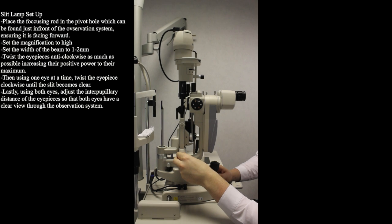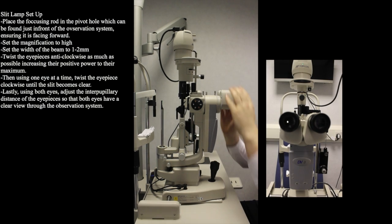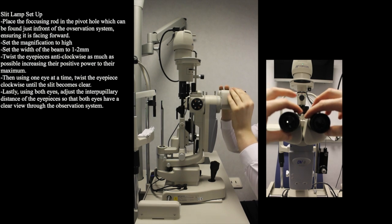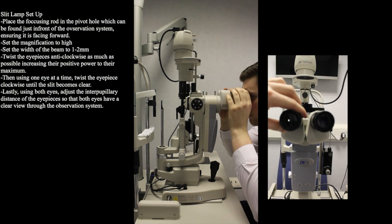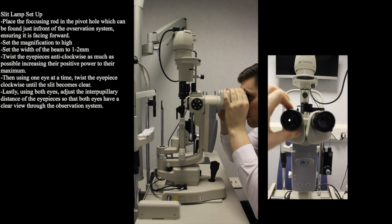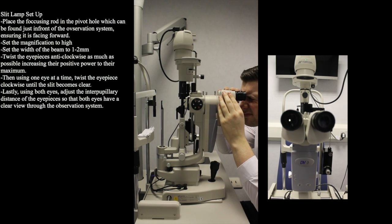We then must focus the eyepieces of the observation system. To do this we twist them anti-clockwise increasing the positive power of the eyepiece to as much as possible. Then using one at a time twist the eyepiece clockwise until the slit becomes clear.